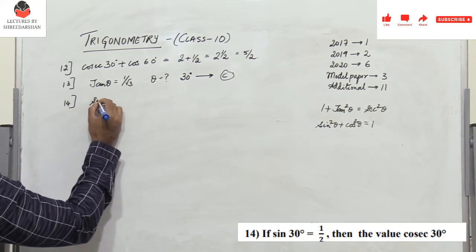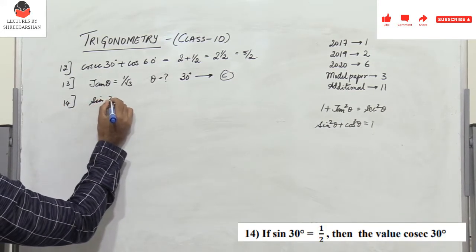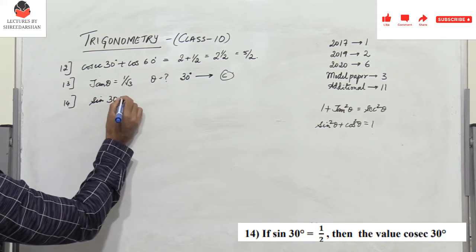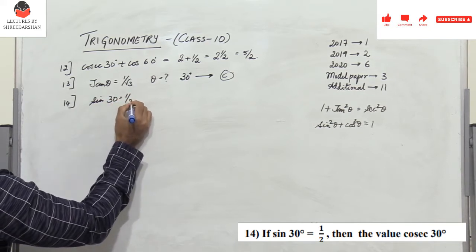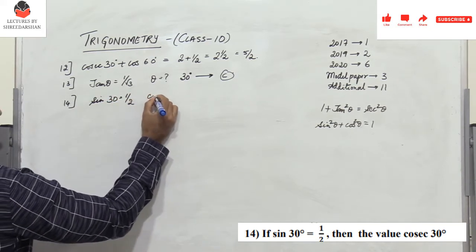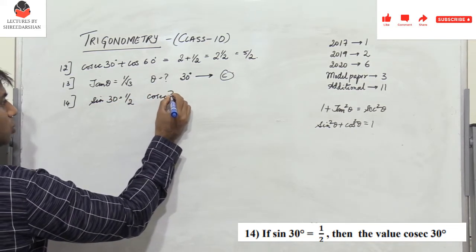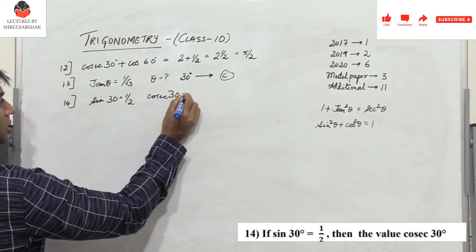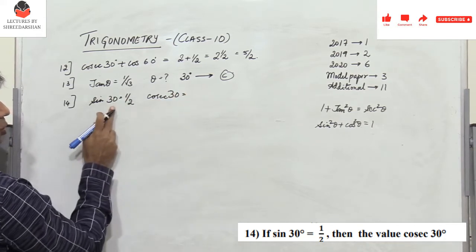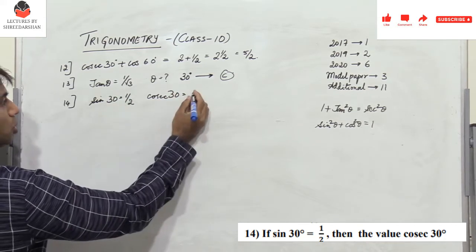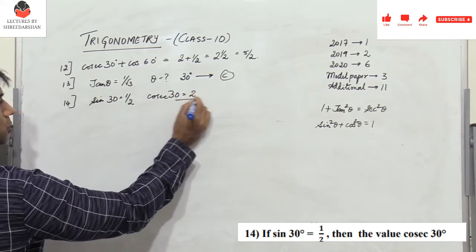Problem 14: given sin30° = 1/2, what is cosec30°? Cosec30° is the reciprocal of 1/2, which equals 2.